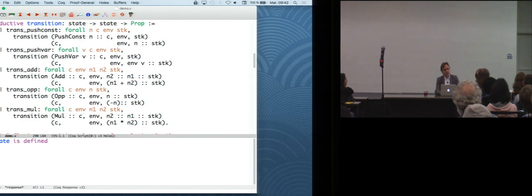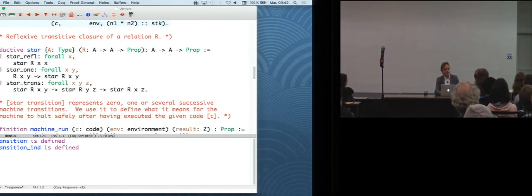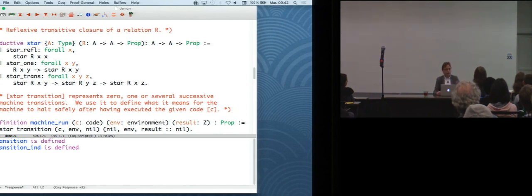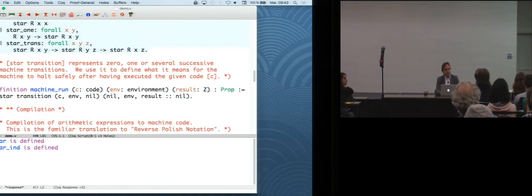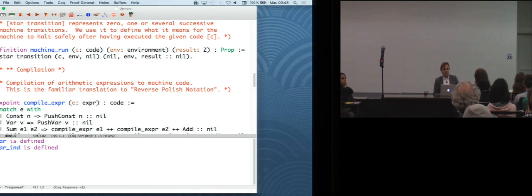All right, so you have those five transitions that correspond to execution of one instruction. And then to say what it means to run a piece of code, then we need to express zero, one, or several transitions. And that's technically that's a reflexive transitive closure of our transition relation, which we can define also inductively. So star is either zero applications of R, a relation R, or one application of R, or some transitions then followed by some other transitions. And so star transition is a relation between states that represents zero or several successive machine transitions. And we can express now what it means for a machine to run successfully a piece of code.